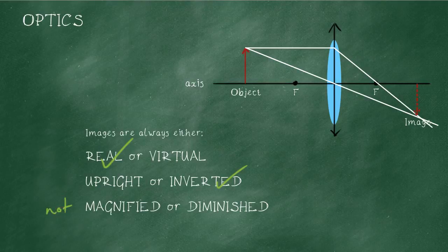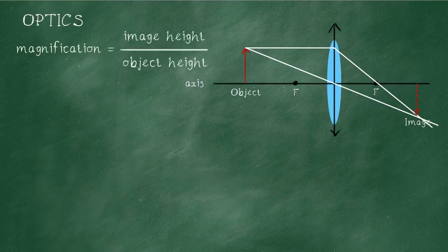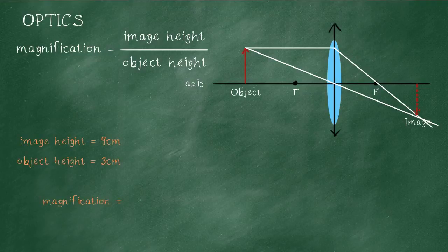You could be given data or asked to take readings from the diagram, take measurements from the diagram, and give an actual numerical value for magnification. So in this case, our image height is nine centimeters and our object height is three centimeters. So the magnification equals the image height divided by the object height, so it is nine divided by three. Nine divided by three is three, so the magnification is three. There's no unit on magnification - it's actually a bit like a scale factor in maths. It's like saying times three.